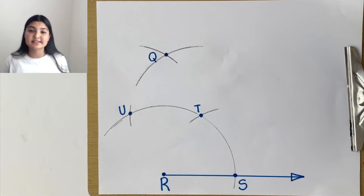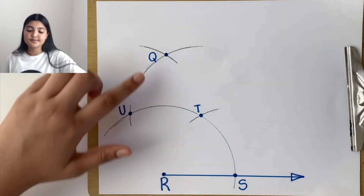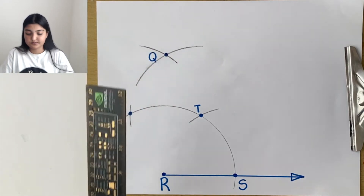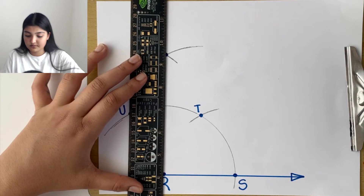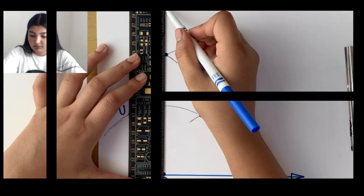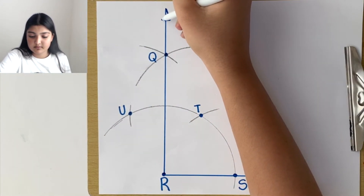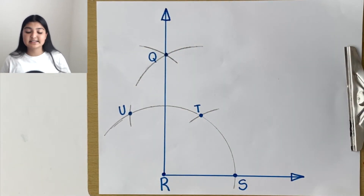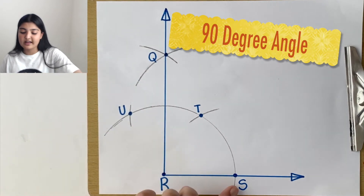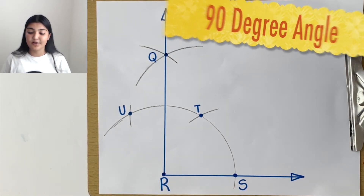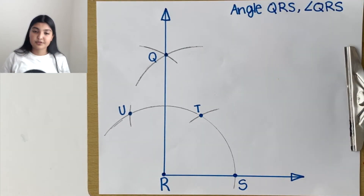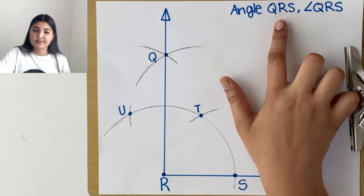To construct our 90 degree angle, make a ray that goes from R to Q and extends. This gives us angle QRS, which is a 90 degree angle. We can write it using the angle symbol.